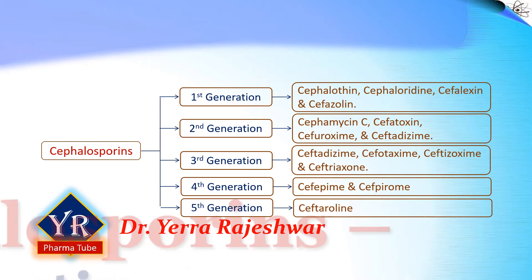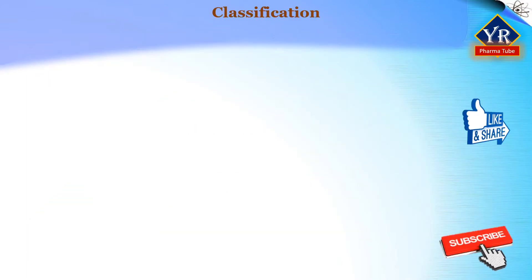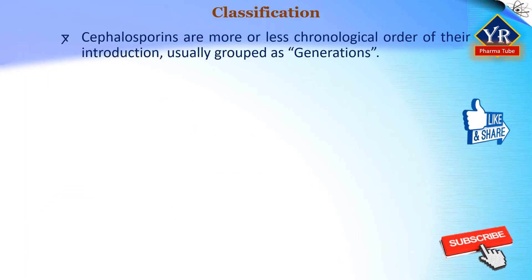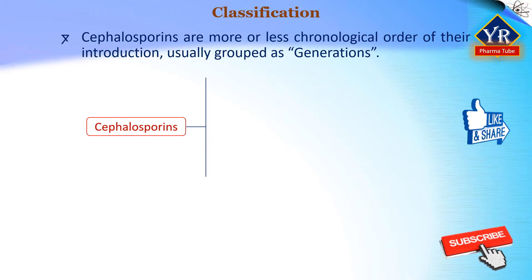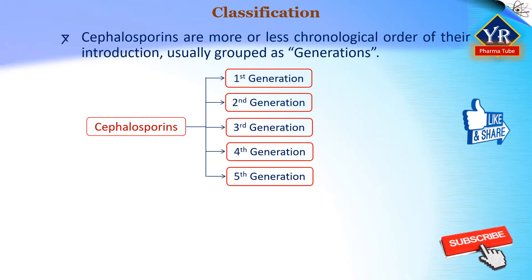In this lesson, we shall discuss the classification of cephalosporins. Cephalosporins available in the US, in a more or less chronological order of their introduction, are usually grouped as generations. Thus, they are classified into first-generation cephalosporins up to fifth-generation cephalosporins.